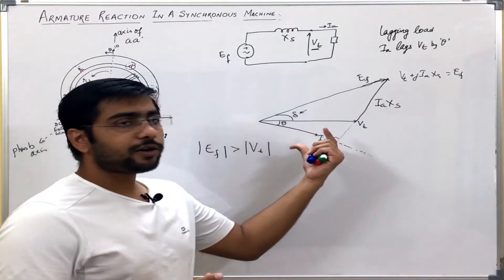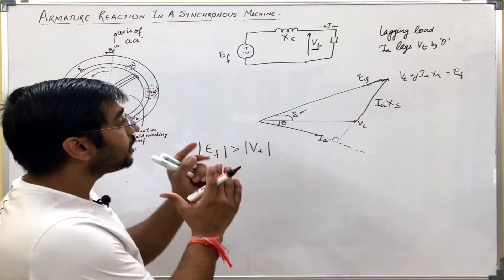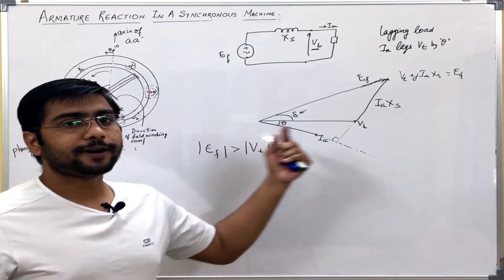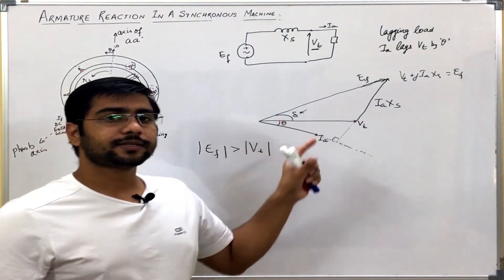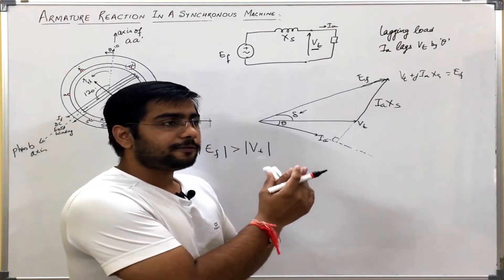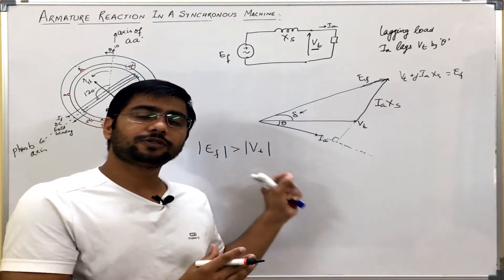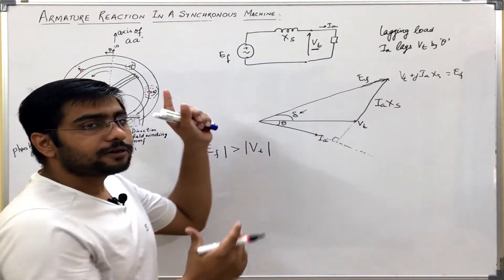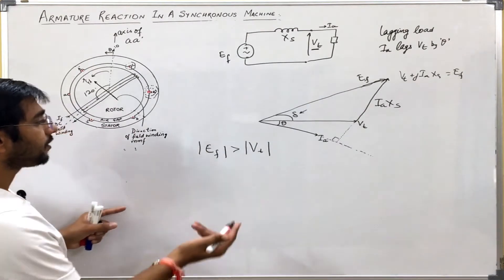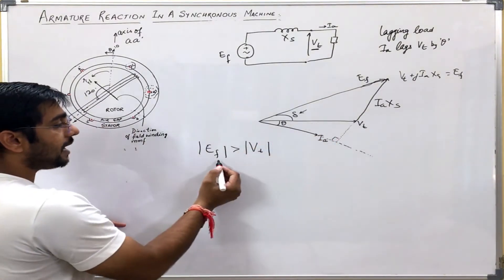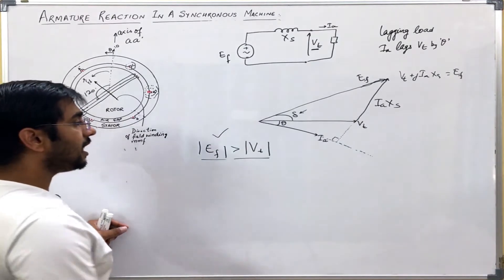So if I draw the phasor diagram which also shows the flux, then I will find that the lagging current creates an effect such that the armature reaction is opposing the rotor flux. Let us see how. You have seen that for lagging current, EF is greater than Vt.